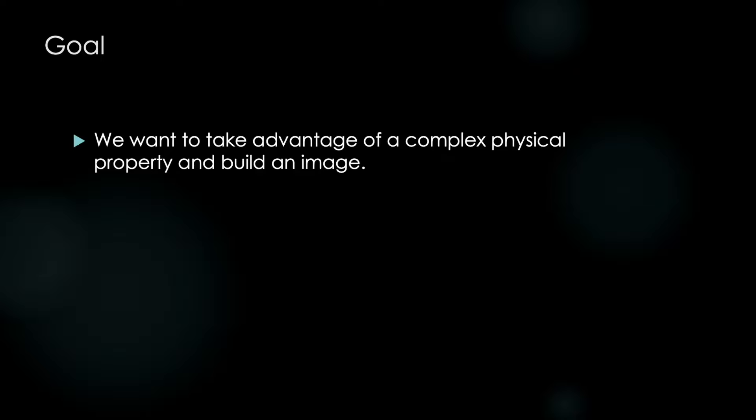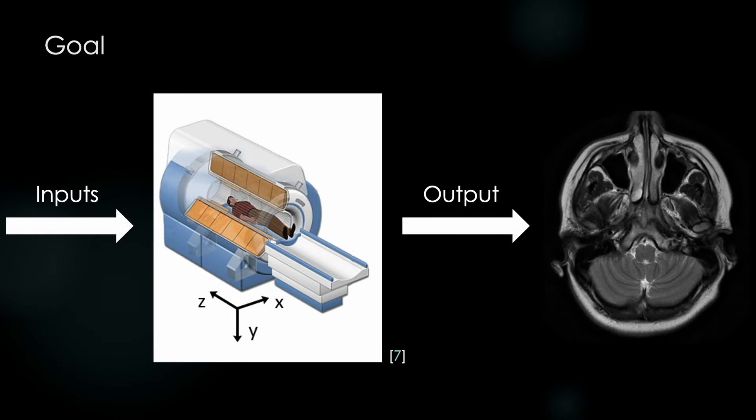So the goal, we want to take advantage of a complex physical property and build an image. In order to do this, we have this machine that we call an MRI machine. It's going to receive some inputs, and it's going to produce an output. And from that, we're going to be able to build this image. So first, let's start by talking about the phenomenon that makes this all possible.